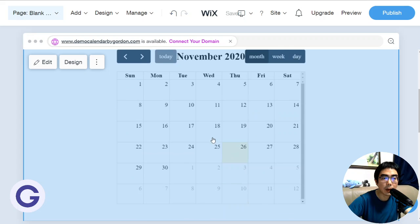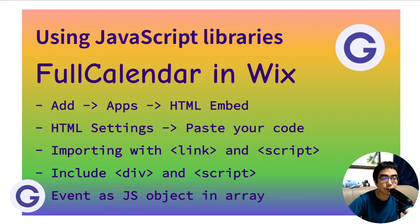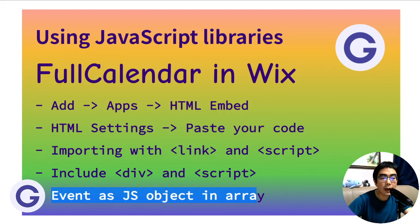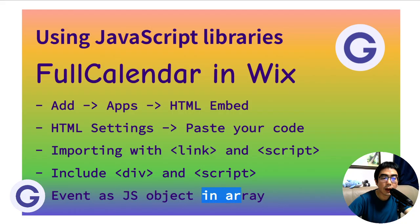That's how to use a JavaScript library in a Wix website. For FullCalendar, we need to add events to it, otherwise there is no reason to use a calendar. So how do we add events? We add them as JavaScript objects in an array.